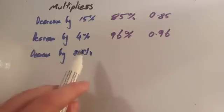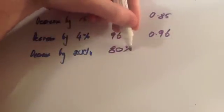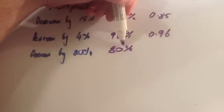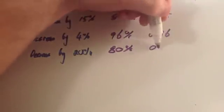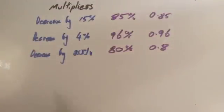And finally, if you wanted to decrease by 20%, well, take 20 away from 100, that's 80%. Divide by 100 means you move the decimal place twice, so that would be 0.8. So if you multiply a number by 0.8, that's the same as decreasing it by 20%.